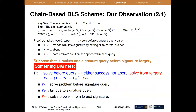We consider the simple case where the adversary will make one signature query before the signature forgery. The success probability equals: the probability of solving the hard problem before the signature query, plus solving the hard problem from the forged signature, when there is no abort in the signature query phase. So P_{s,i,1} is the probability of solving the hard problem before the signature query, and P_{f,i,1} is the failure probability due to the signature query.